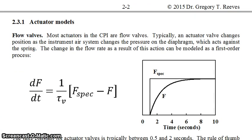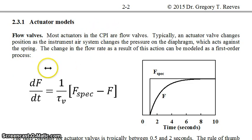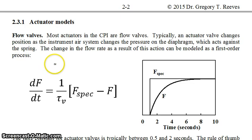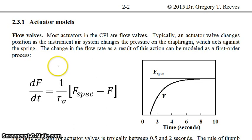Common actuator models: usually an actuator is some sort of valve which, when adjusted, changes the flow — this is the most common actuator in the chemical process control industry. When the specified flow rate changes, it takes some time for the valve to actually open to the new position, so we can model the change in flow rate as a first-order process.